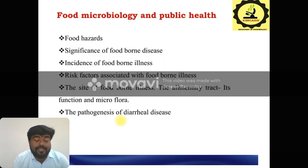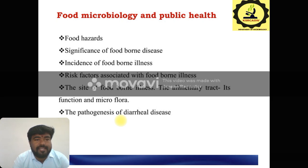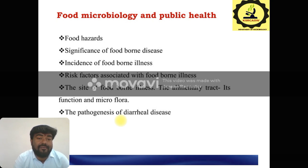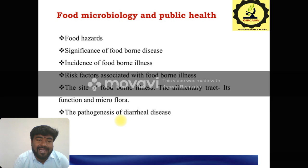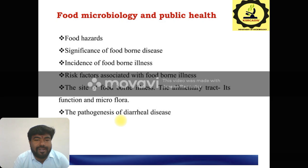What is the food microbiology relationship with public health? Public health is about creating awareness of food hazards. Food hazards are an important factor that cause infections from food sources in our public. Then the significance of foodborne diseases — the importance and awareness of foodborne diseases. Then the incidence of foodborne illnesses — what incidences cause foodborne illness, for example contaminated water. These are also causing foodborne illnesses. Then what are the risk factors associated with foodborne illnesses?